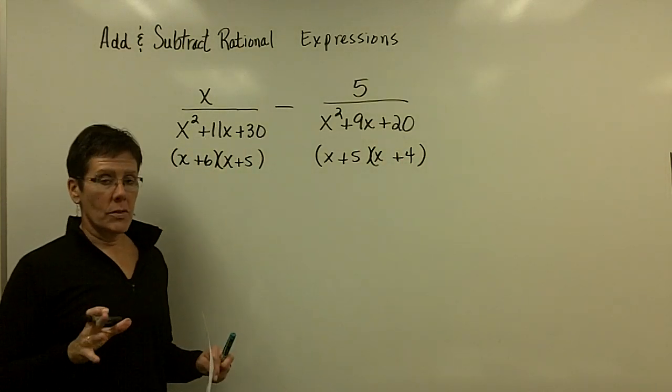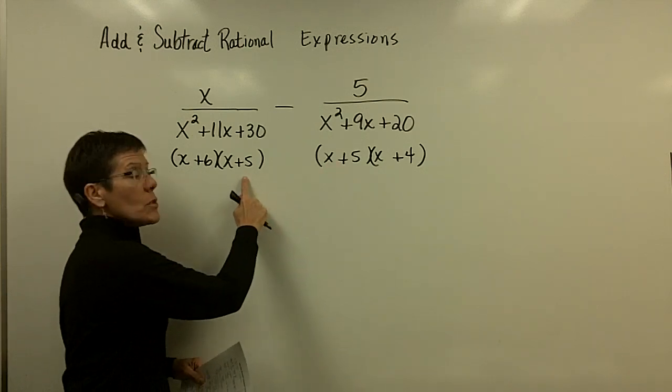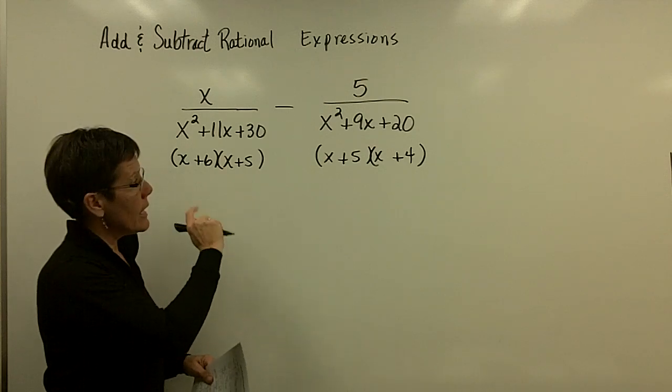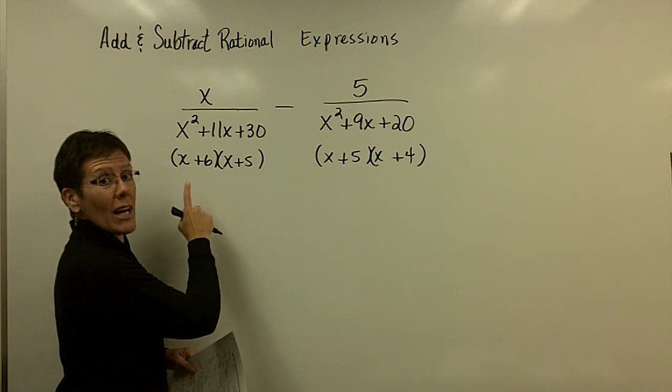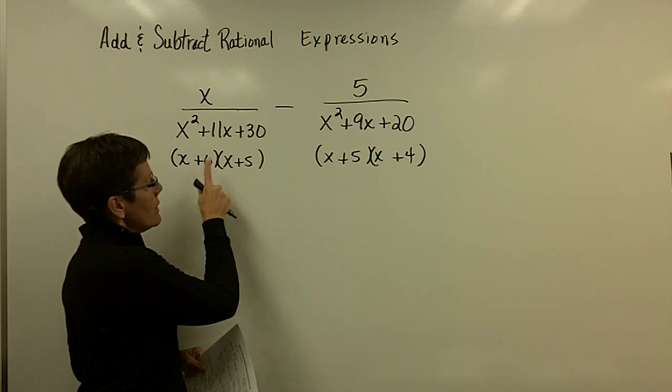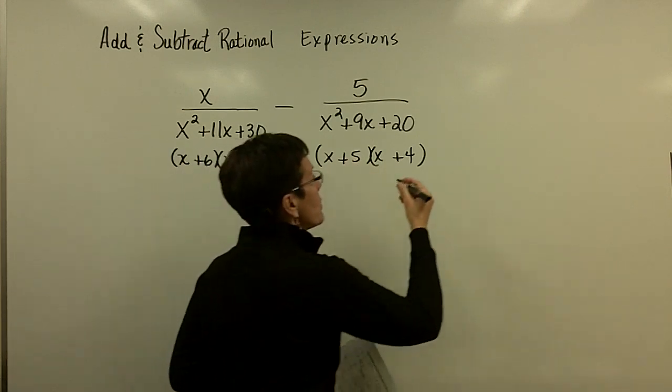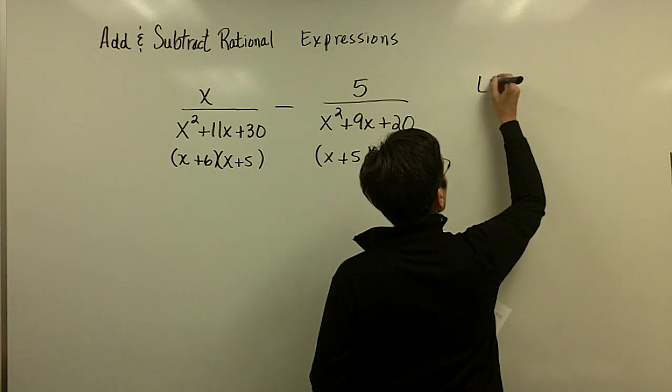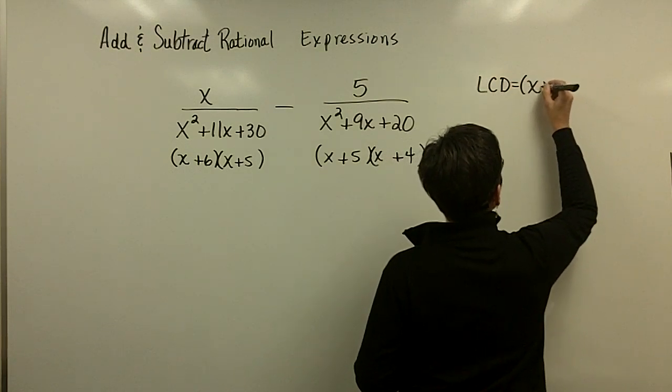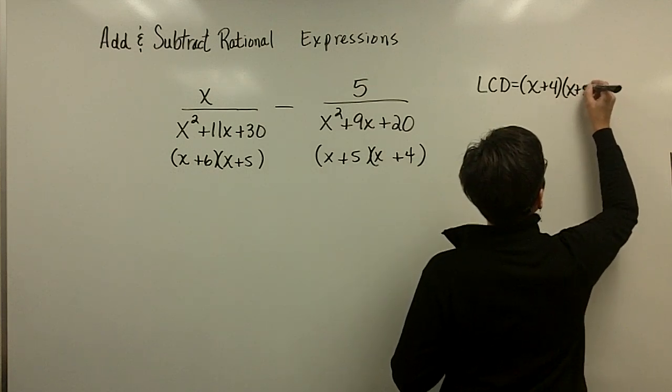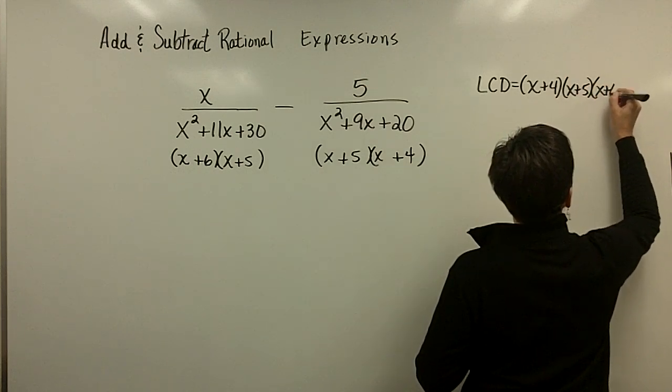So, of these binomials, I have to use them all once. The x+5 only needs to be used once because it occurs once in any of the common, in any of these denominators. So, my LCD has got to have that one. It's got to have that one. It's already got that one. It's got to have the x+4. So, my LCD needs three binomials. I'll go ahead and put them in order. It needs the x+4. It needs the x+5. And it needs the x+6.